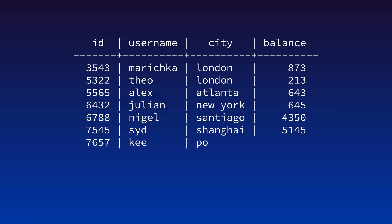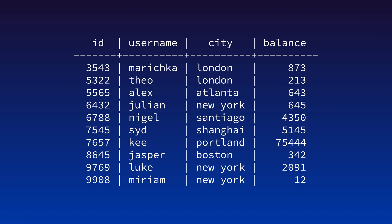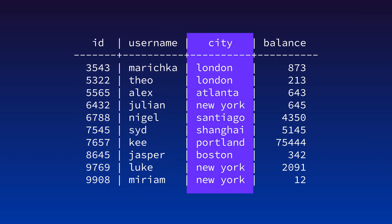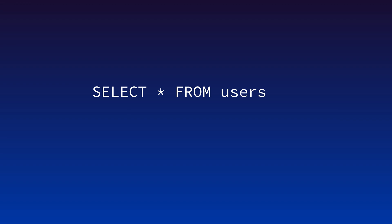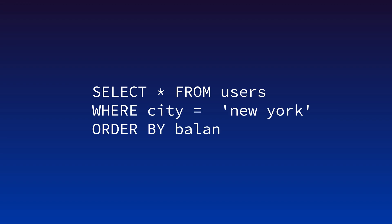Imagine we've got a users table in a SQL database, and it looks something like this, with columns for ID number, name, city, and account balance. Let's say we want to run a query to find all of the users in New York and sort them by their account balance.